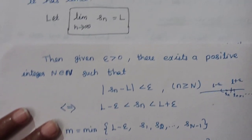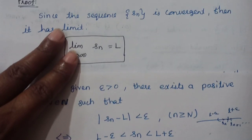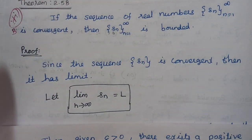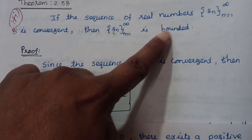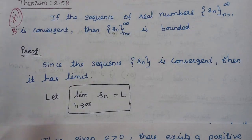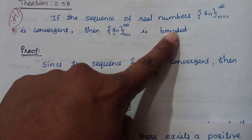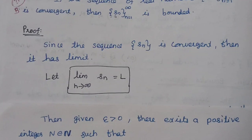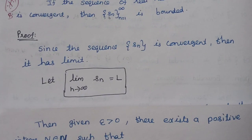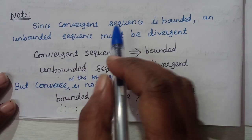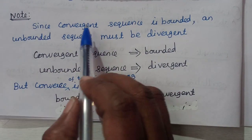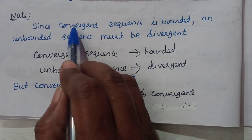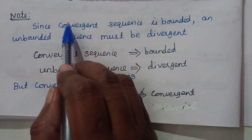Now, is the converse true? Does bounded imply convergent? That is not true. Note: a convergent sequence is bounded, but the converse — bounded implies convergent — is false. If a sequence is unbounded, we cannot say it is divergent in a specific sense; we just know it is not convergent.